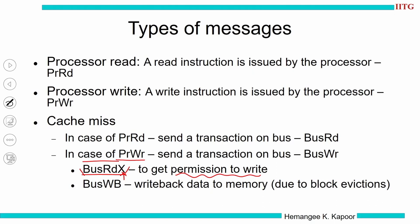Another variant is the bus write back. This happens when a cache removes the block — during block evictions due to cache replacement policies, or when a new reader comes into the system. If P1 has this block dirty and P2 wants to read it, the data has to be provided by P1 to P2, and in that case something similar to a write back must occur.